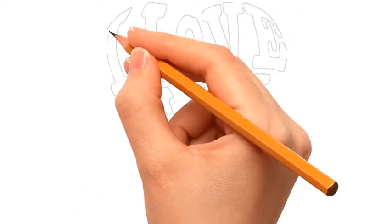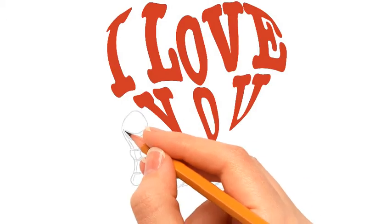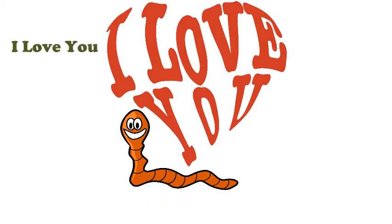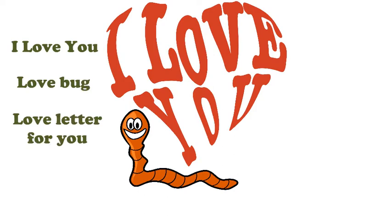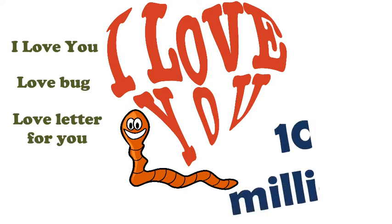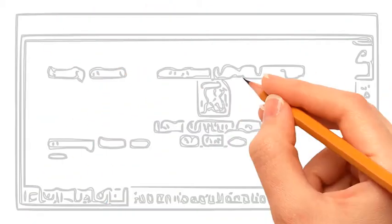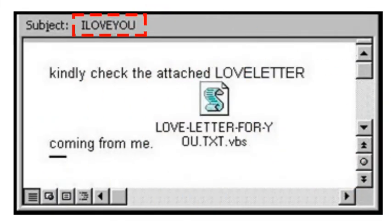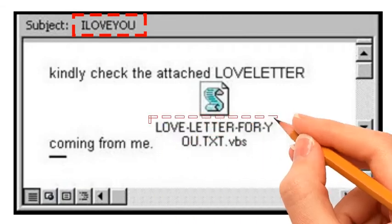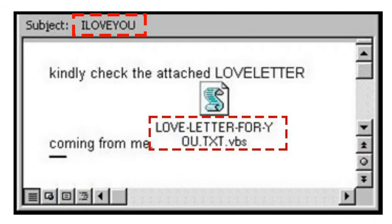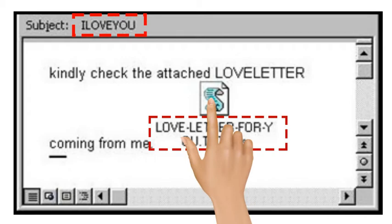One example of a famous worm is the ILOVEYOU worm. Sometimes referred to as Love Bug or Love Letter For You, it is a computer worm that infected over 10 million Windows personal computers on and after May 4, 2000. It started spreading as an email message with the subject line 'I love you' and the attachment 'love letter for you.txt.vbs'. Opening the attachment activates the Visual Basic script.